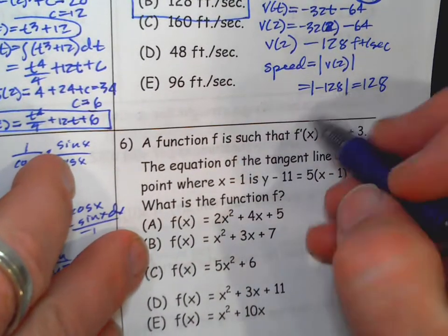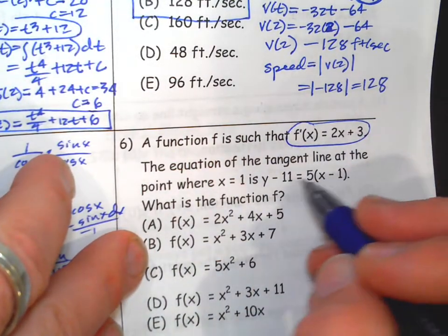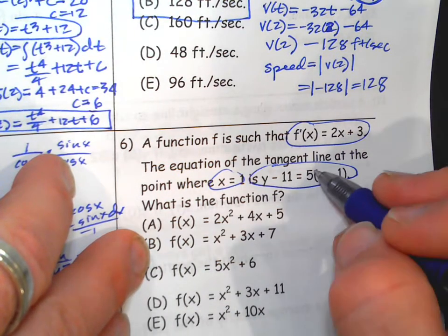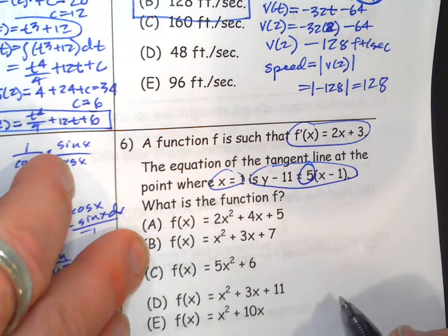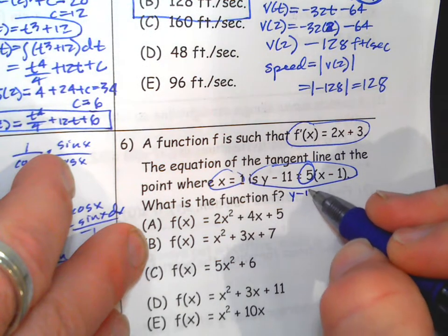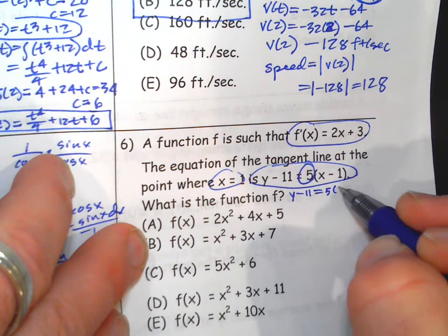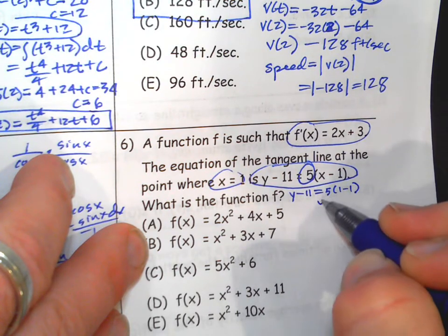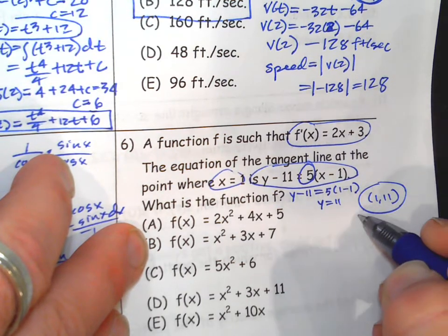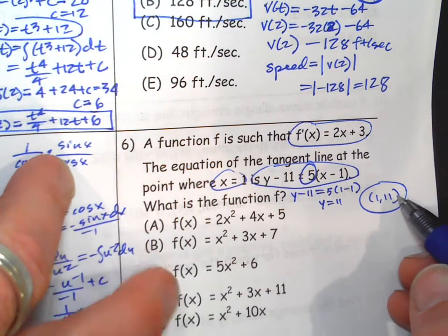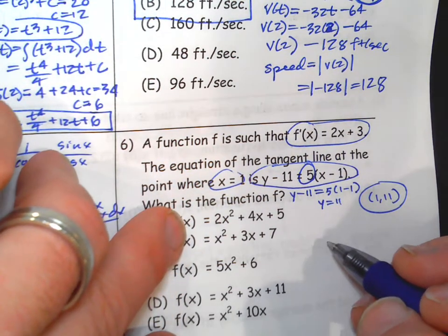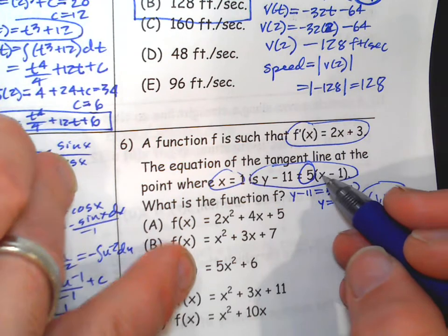Okay, number 6. Function f. They're giving me derivative, equation of a tangent line x equals 1. So we're probably going to get initial conditions from this. There's the slope, right? If you want a point, you plug x in and get y equals 11. So the point is (1, 11) that they share, right? So that's your initial condition.